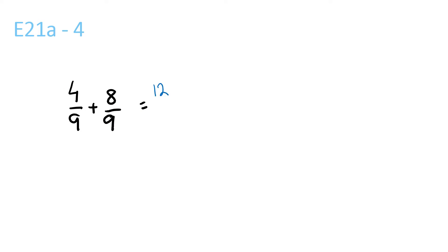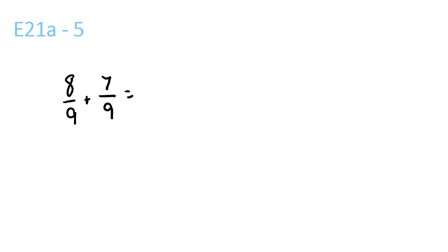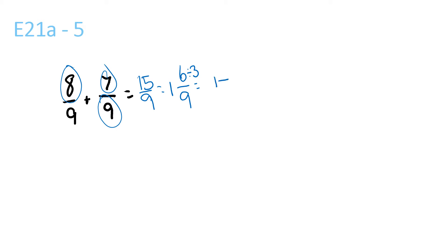4 plus 8 is 12, the 9 at the bottom you just bring it over. 9 goes into 12 once with a remainder of 3 over 9. That is equal to: 6 divided by 3 is 2, and 9 divided by 3 is 3. So the answer is 1 and 2 over 3.